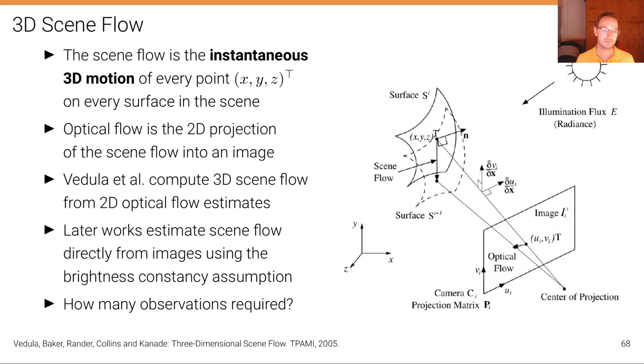But later works, of course, estimate scene flow more directly from images using the brightness constancy assumption, basically extending the Horn-Schunck approach to more images in order to estimate scene flow directly, similar to the Horn-Schunck algorithm for optical flow.